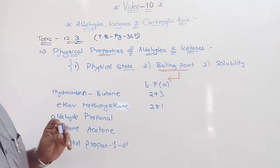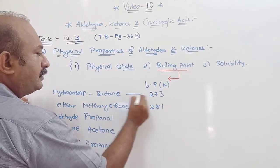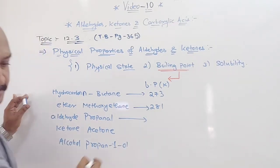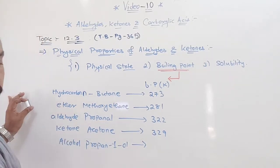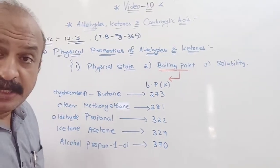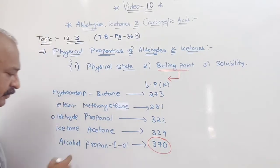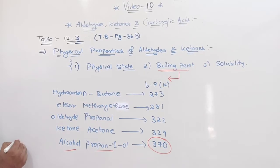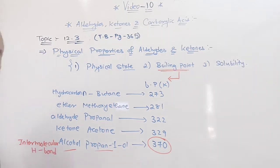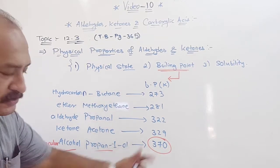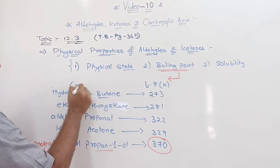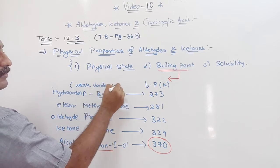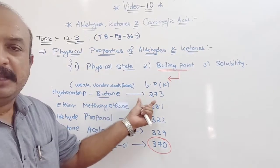The highest boiling point is that of alcohol. The reason for this is intermolecular hydrogen bonding between the molecules. This is the reason for alcohol to have the highest boiling point. For the hydrocarbon butane, there are only weak van der Waals forces, so the boiling point is the least.